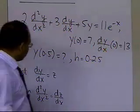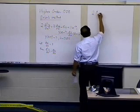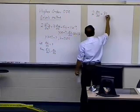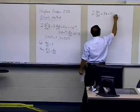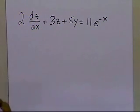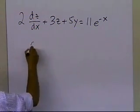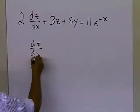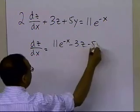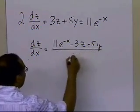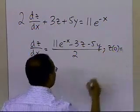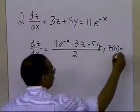Substituting, the equation becomes 2(dz/dx) + 3z + 5y = 11e^(-x). Rewriting, dz/dx equals (11e^(-x) - 3z - 5y) / 2. This is the first ordinary differential equation, and its corresponding initial condition is z0 = 13, because the first derivative of y at 0 is 13 and we defined dy/dx to be z.